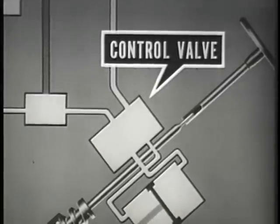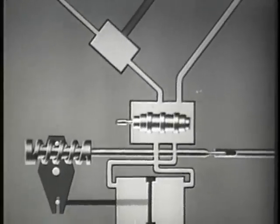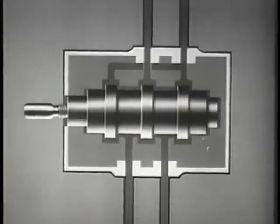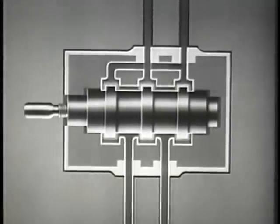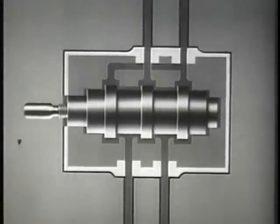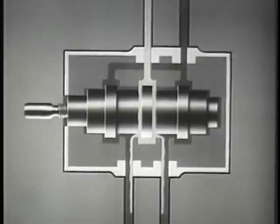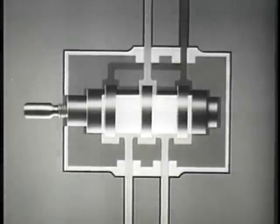The control valve is the heart of the hydraulic steering system. The control valve has a spool which directs and controls the flow of fluid to the power cylinder. With the fluid removed, let us look at the internal construction of the control valve. The spool has lands which control the flow of fluid through the passageways to the power cylinder. The fluid enters the control valve through the inlet port and flows around the spool in channels leading to the power cylinder. After the cylinder has been filled, all fluid then flows to the reservoir.